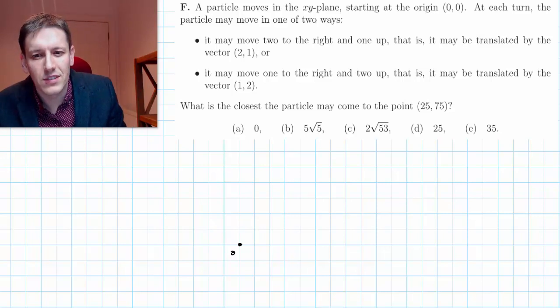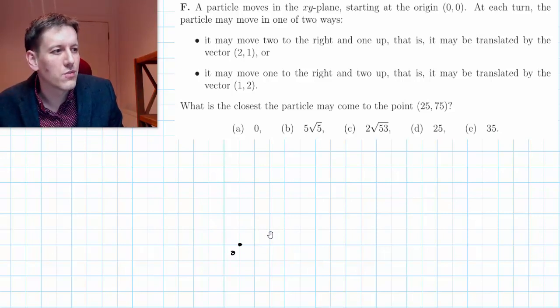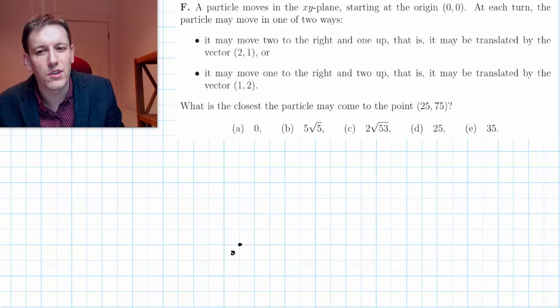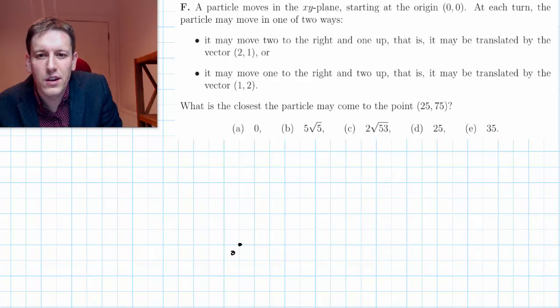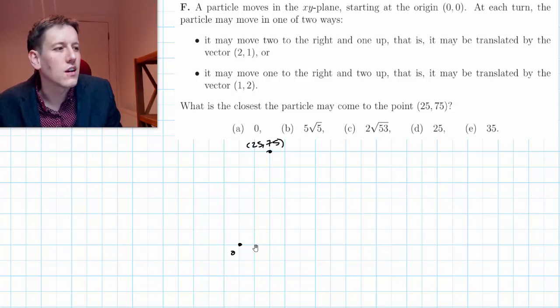We can only go two across and one up or one across and two up, and we've got to get to this point (25, 75). Let's put that on here roughly, maybe (25, 75) will be here. That's two squares across and six up.